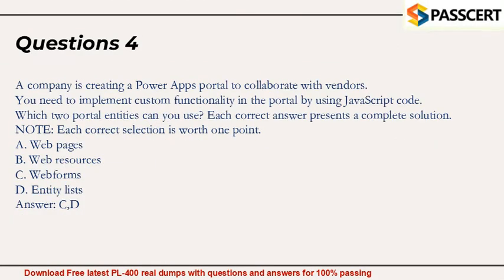Question 4: A company is creating a Power Apps portal to collaborate with vendors. You need to implement custom functionality in the portal by using JavaScript code. Which two portal entities can you use? Each correct answer presents a complete solution. Note: each correct selection is worth one point. A. Web pages. B. Web resources. C. Web forms. D. Entity Lists. Answer: C and D.